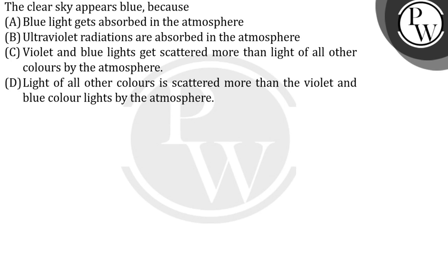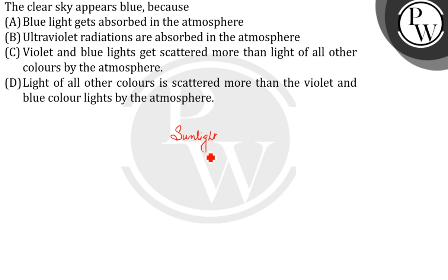Hello. The question given here is: the clear sky appears blue because — so the sunlight when it reaches the earth's atmosphere, it's scattered in all directions by the gases and the particles in the air. In the visible spectrum, the